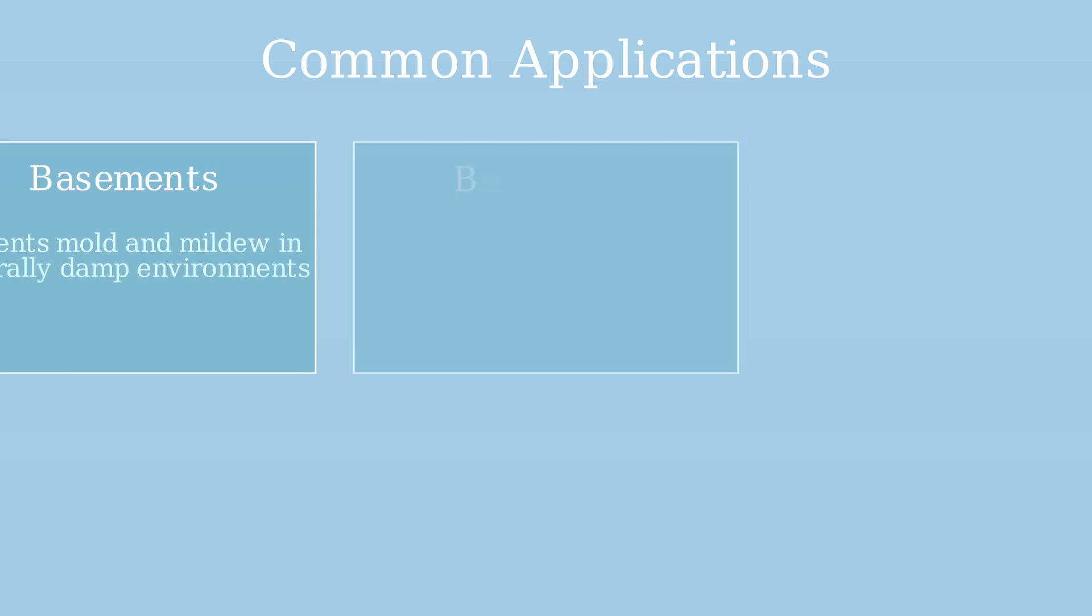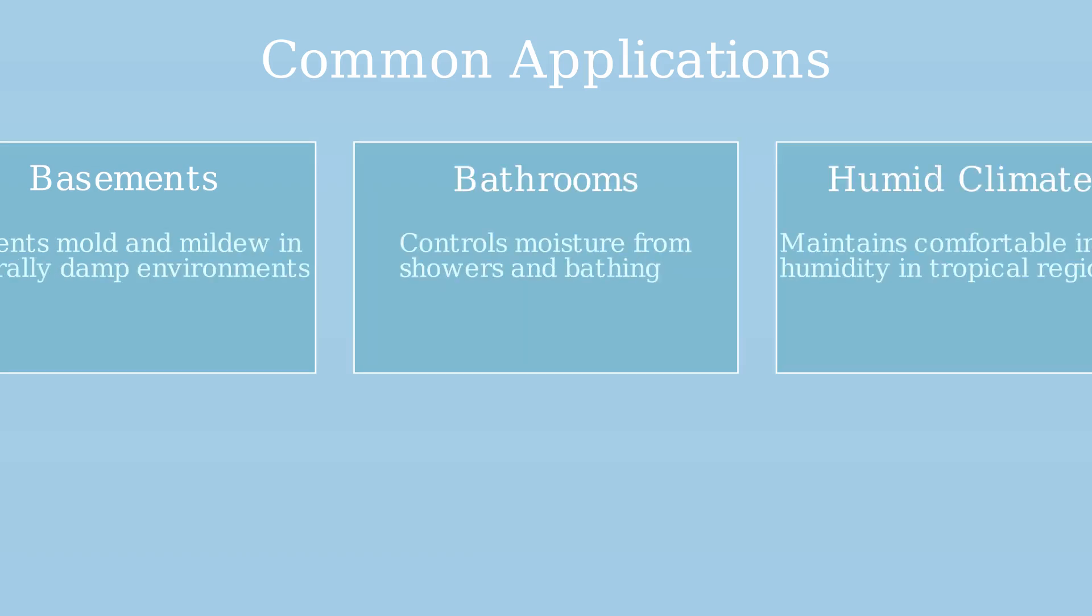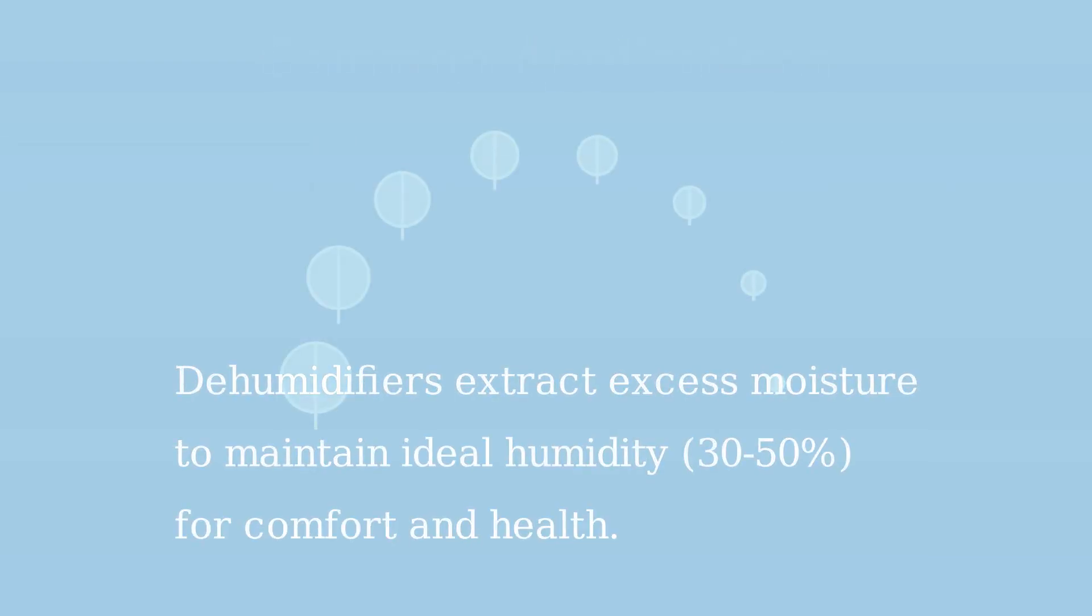Dehumidifiers are especially useful in naturally damp basements, bathrooms with moisture from showering, and in humid climate regions where outdoor moisture can cause indoor problems. In summary, dehumidifiers work by extracting excess moisture from the air, maintaining ideal humidity levels between 30 and 50%, creating healthier and more comfortable indoor environments.